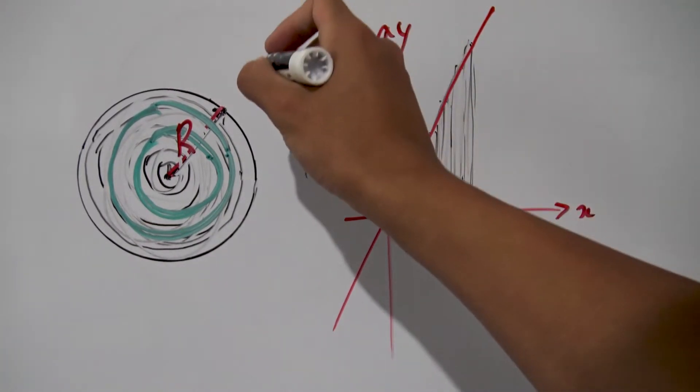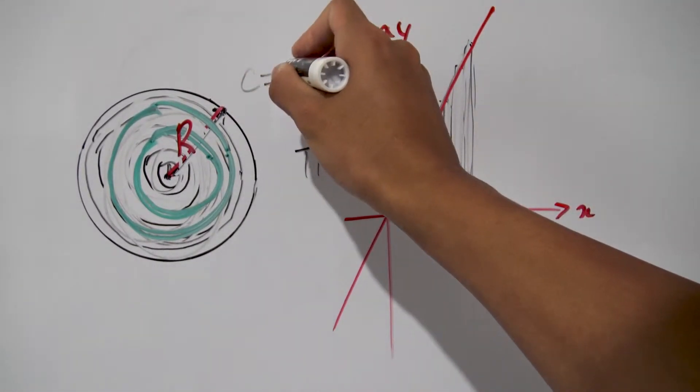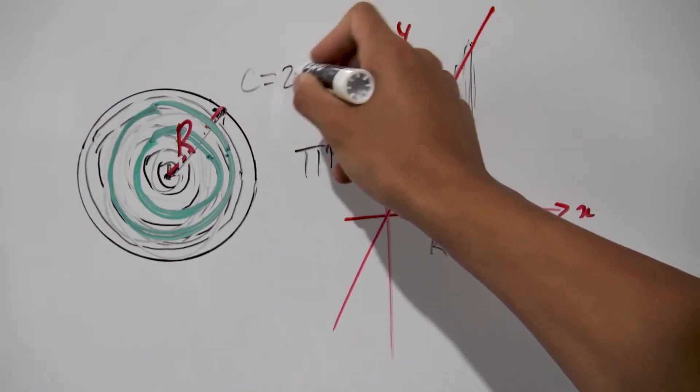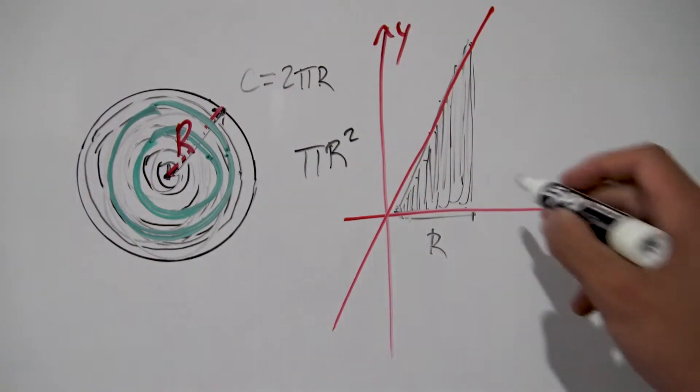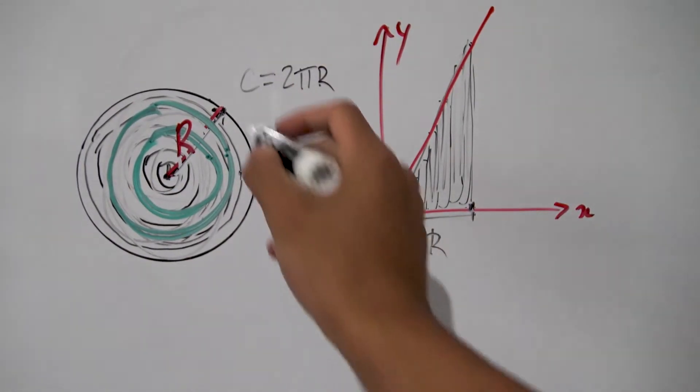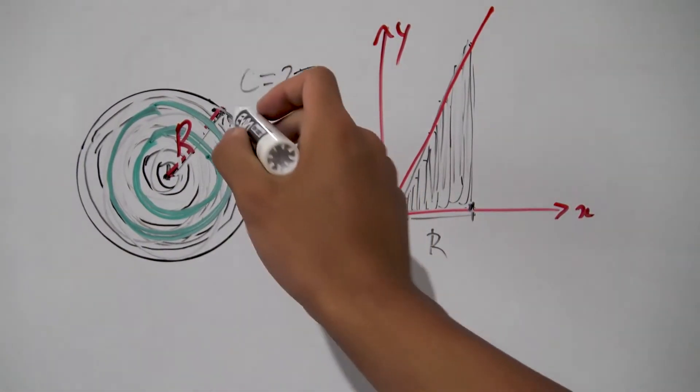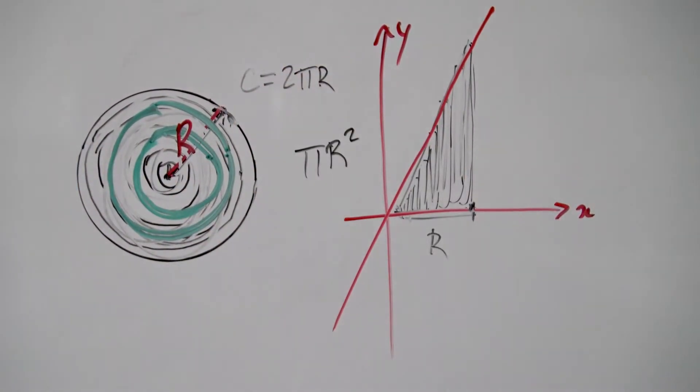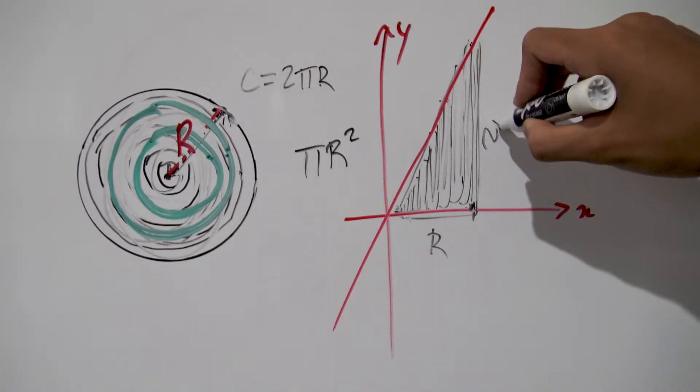Well remember the formula for the circumference of our circle. It's nothing but 2 times pi times our radius. Well if we consider this very last ring right here, that's exactly the ring on the outside that's going around the circumference of our circle. Well that ring has a radius of 2 pi r. That means when we unfold all of this the height of this last tower here will be exactly 2 pi r.